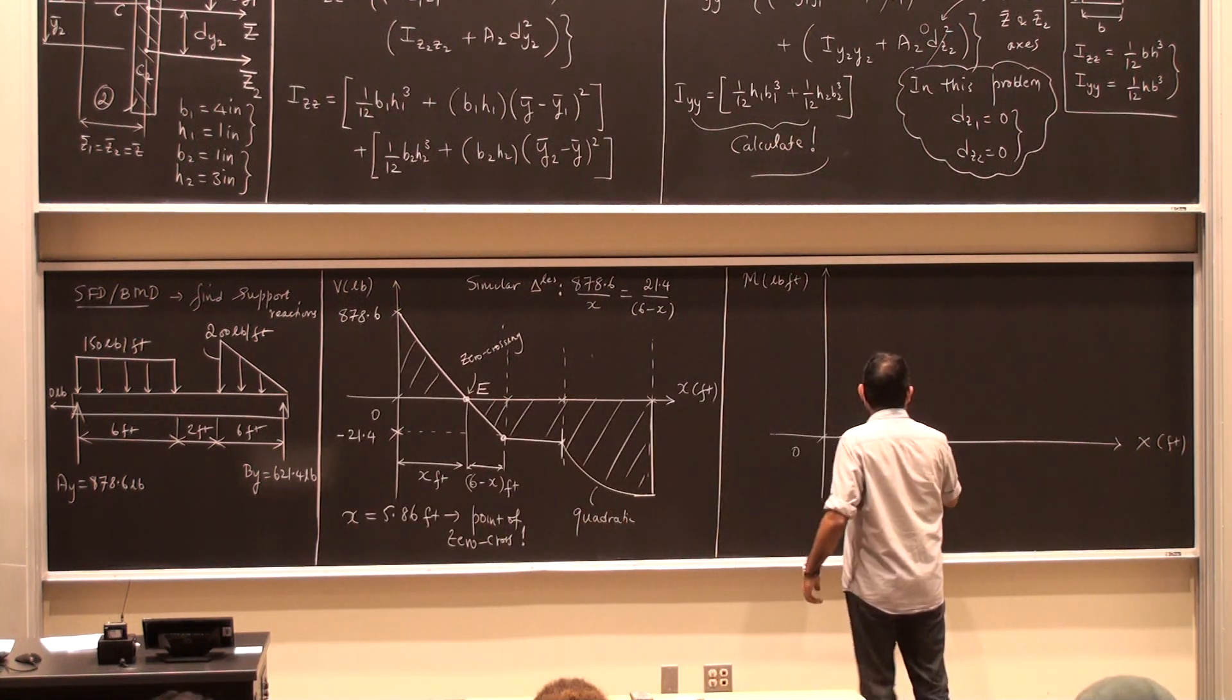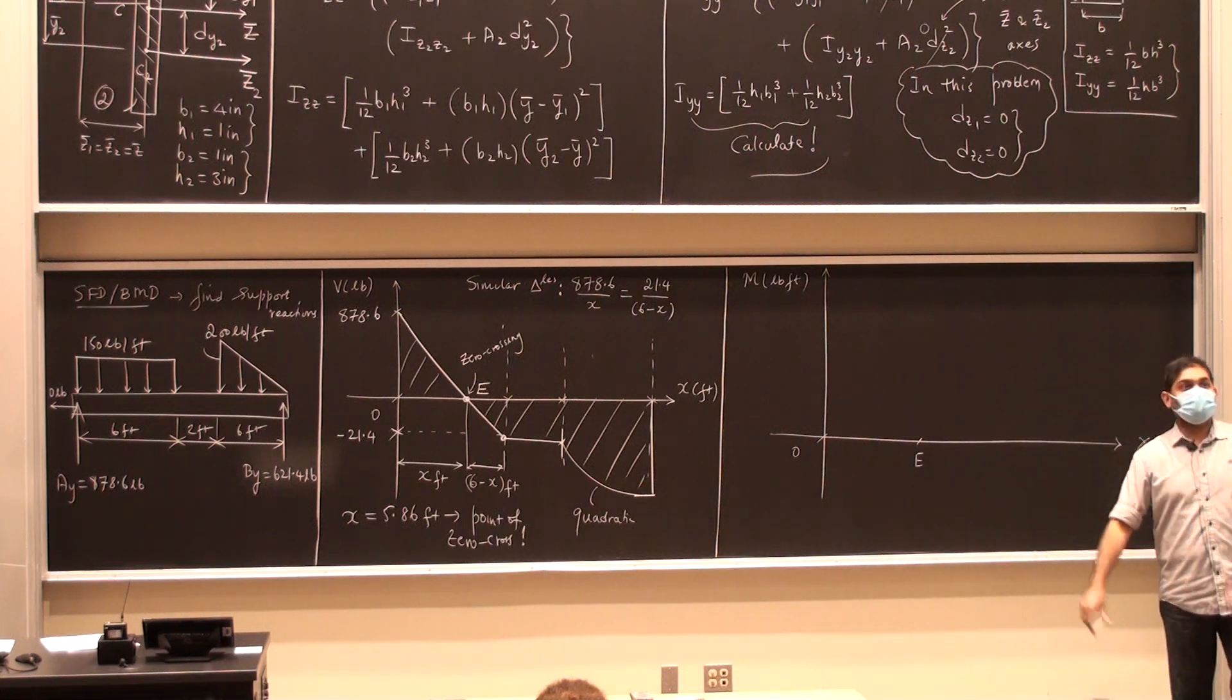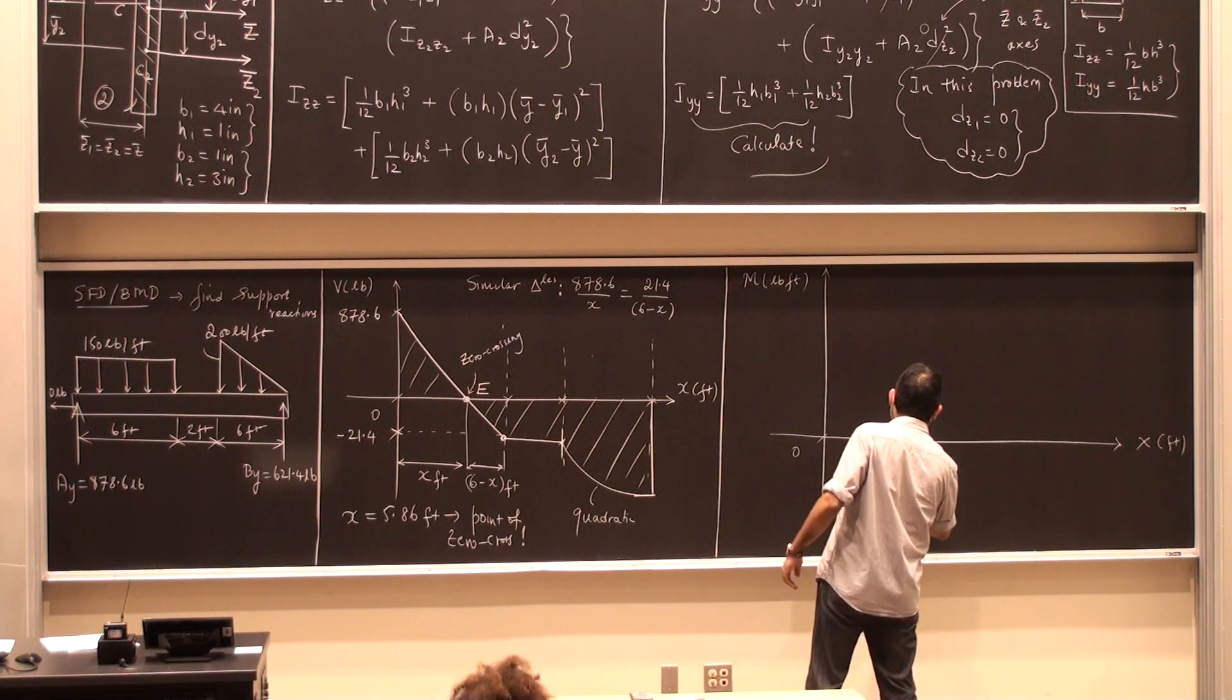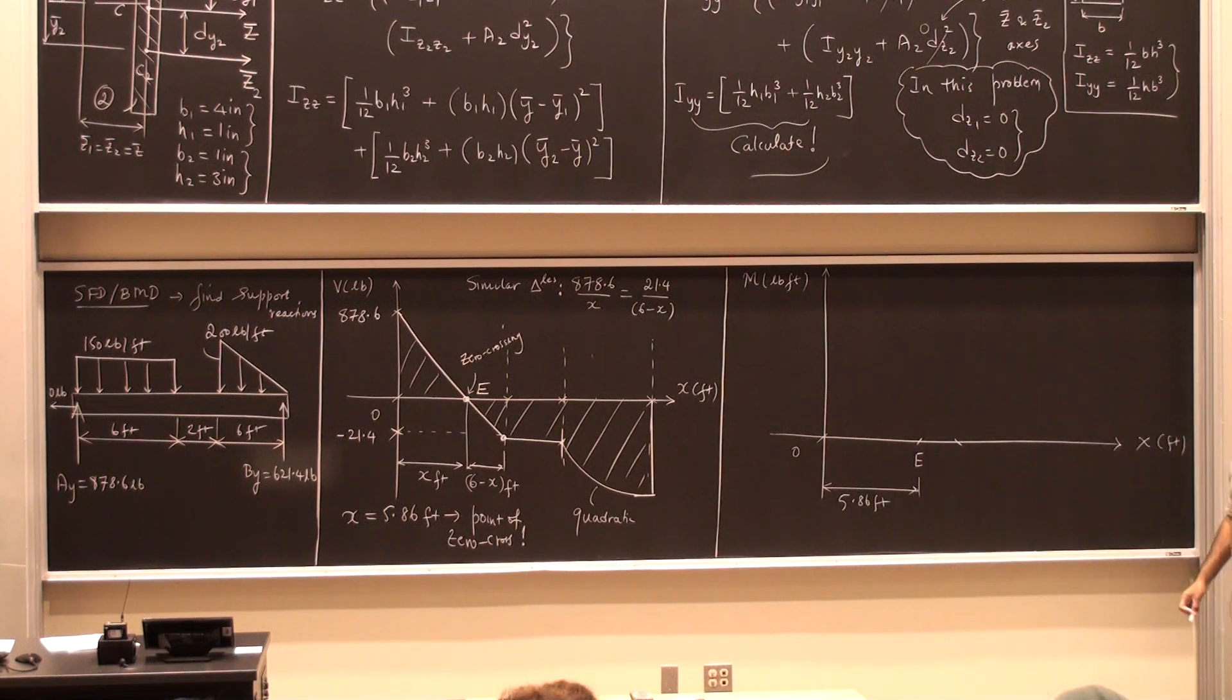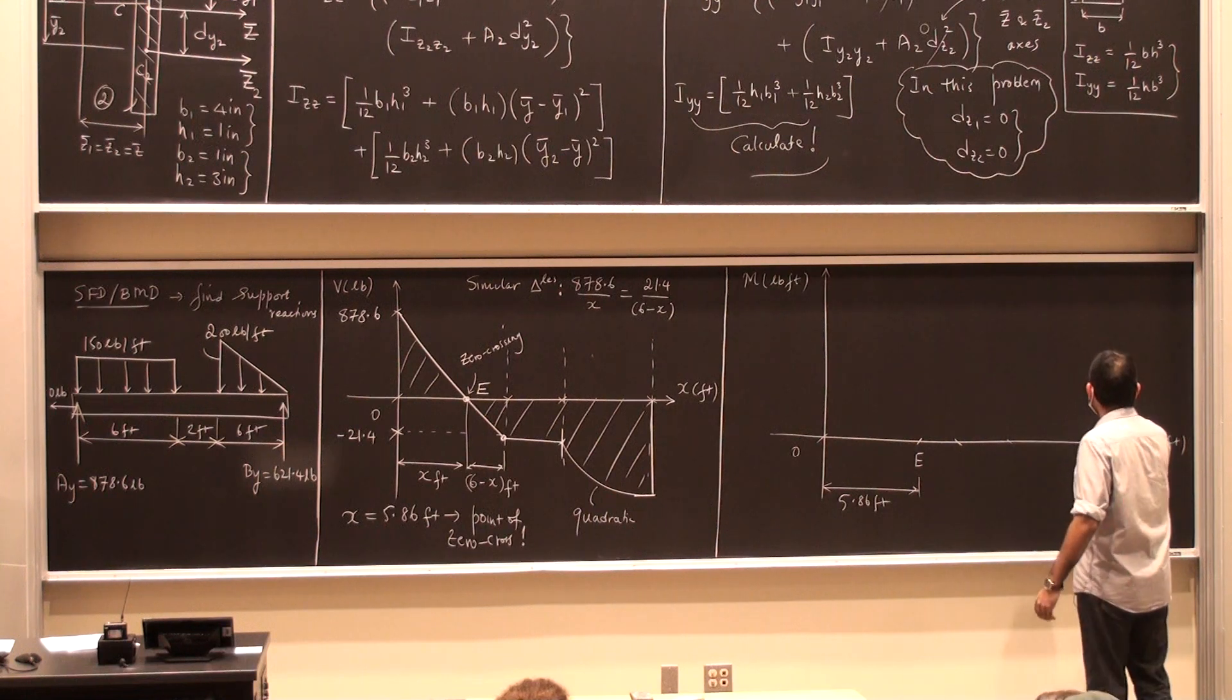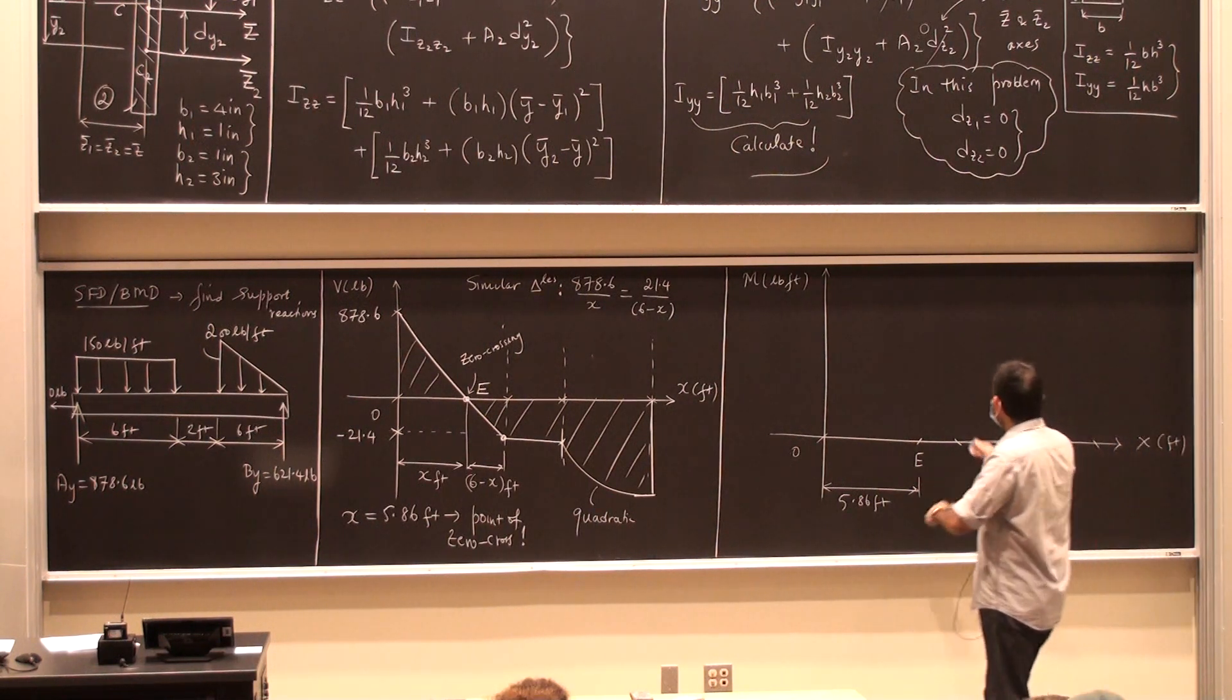Zero. This is zero. This is the point E, which is at a distance of 5.86 feet. Then this is where I end up being 6 feet. And this is the end of the building. Okay? So these are my lines of interest.